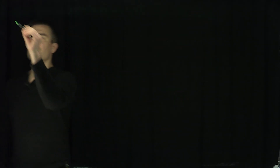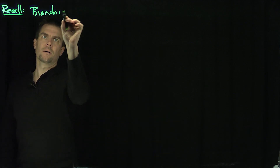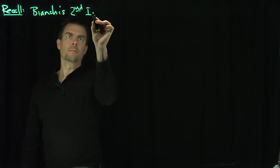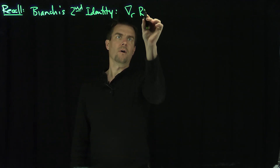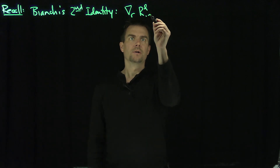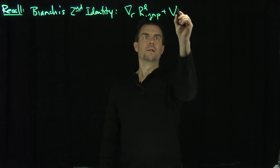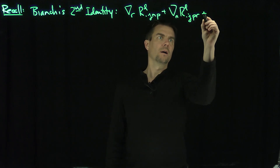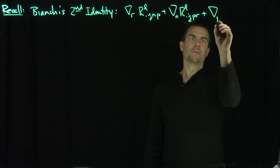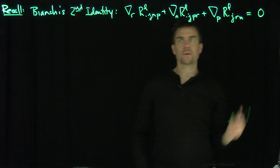Hello students. In this video we'll prove the contracted Bianchi identity. So let's recall that Bianchi's second identity states that the R-covariant derivative of the Riemann-Christoffel tensor R^L_JNP plus the N-covariant derivative of R^L_JPR plus the P-covariant derivative of R^L_JRN is equal to zero.